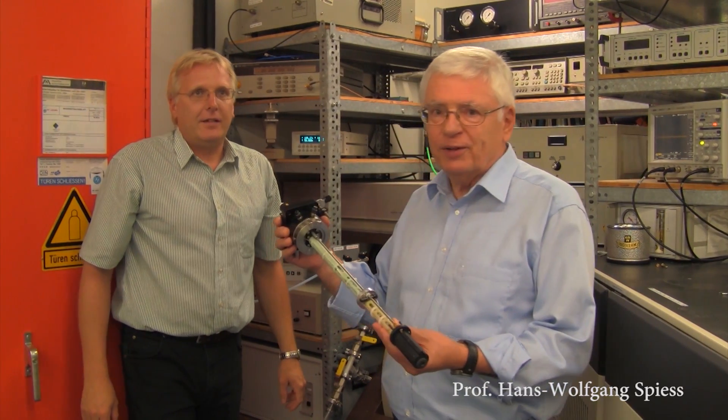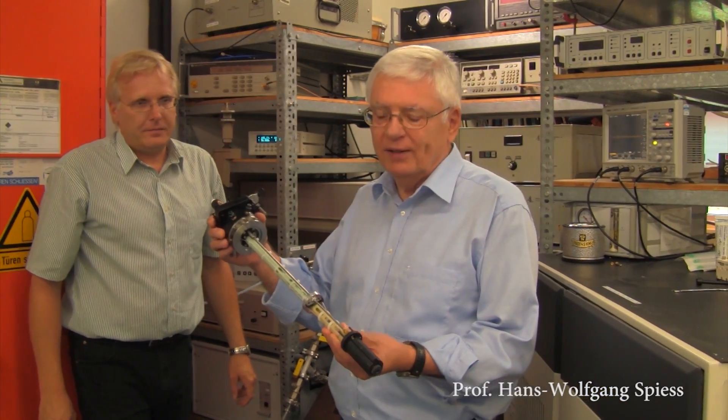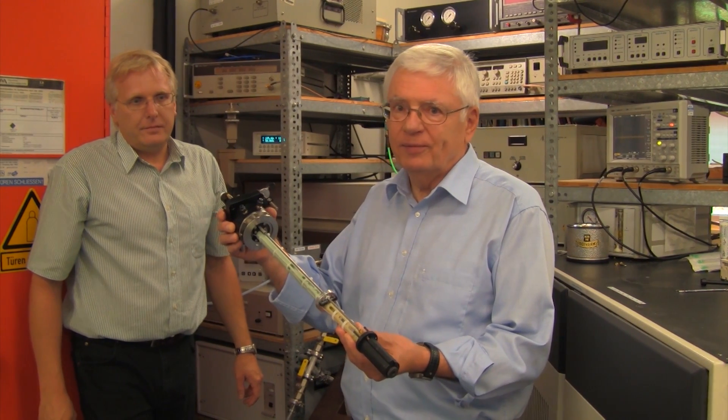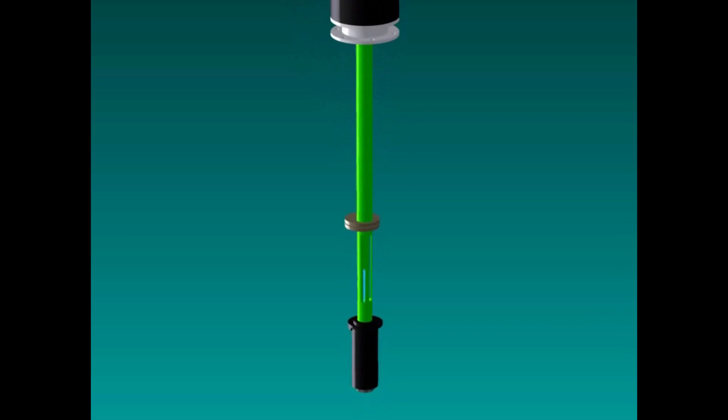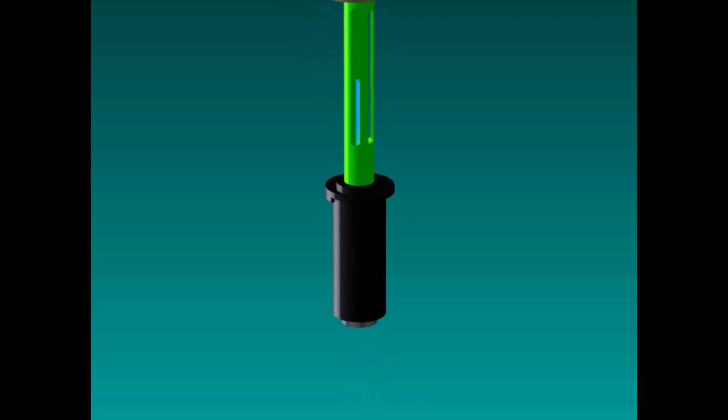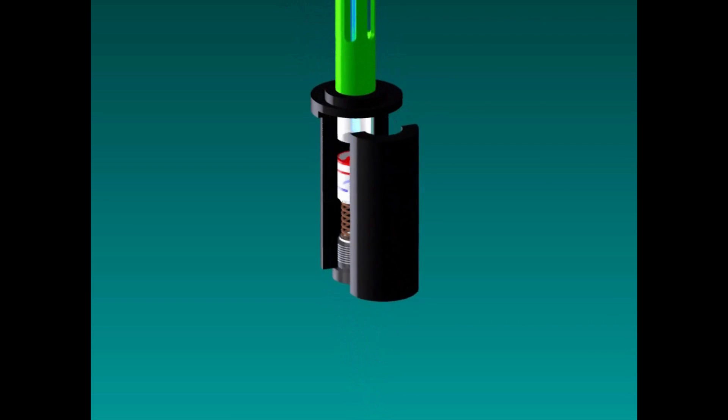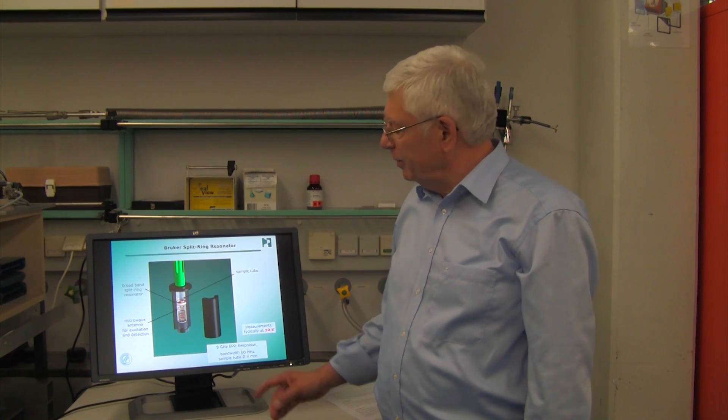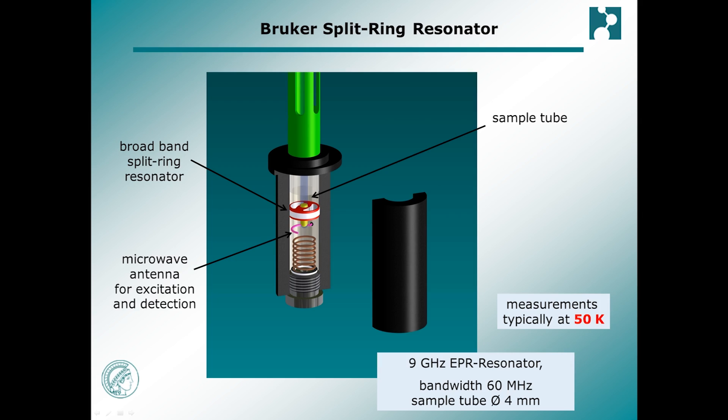The heart of the EPR spectrometer is the EPR probe head. Let us have a closer look at the Bruker split-ring resonator that we use today and its interior. The hardware has significantly been improved since we recorded our first EPR spectra. This makes such experiments almost routine today, despite requiring cryogenic temperature.